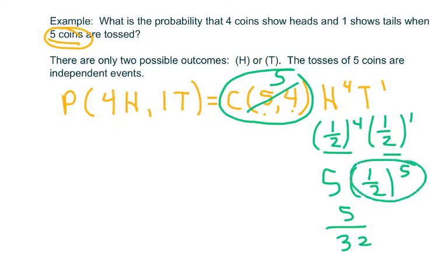Remember you have to do this part first, PEMDAS. Yeah, let's talk about what this means. Four heads, so let me talk about what this part here means. Instead of writing all the possibilities out, that means there's five ways to get four heads and one tail.